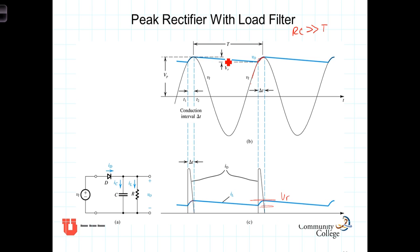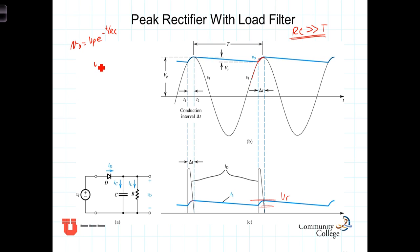V sub R is the amount of voltage drop on the capacitor before it is recharged each cycle. Consistent with a single time constant circuit, during the discharge time the voltage across the capacitor, V out, is going to equal V sub P times e to the minus T over RC. Since RC is much greater than T, the charge time delta T is very small, and we can approximate the voltage at the end of the discharge to be V sub P times e to the minus capital T over RC.